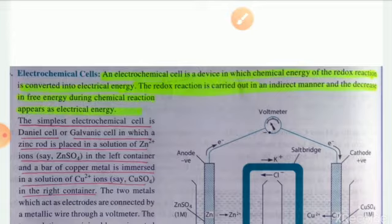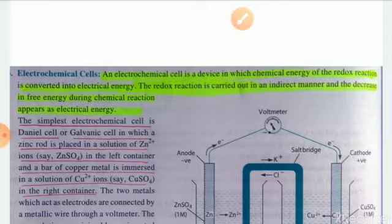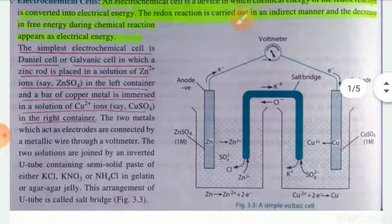An electrochemical cell is a device in which production of electricity takes place because of the energy released during a redox reaction. In this way, an electrochemical cell converts the chemical energy of a redox reaction into electrical energy. The redox reaction is carried out in an indirect manner, and the decrease in free energy during the chemical reaction appears as electrical energy.